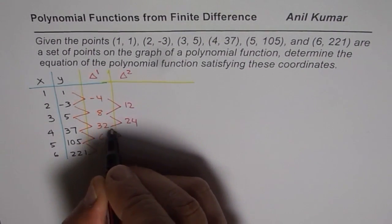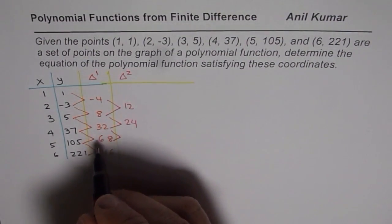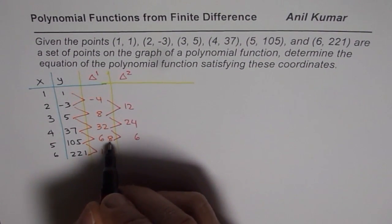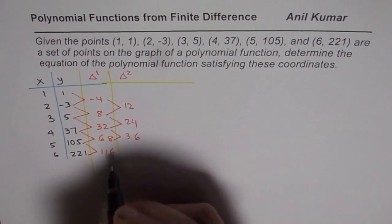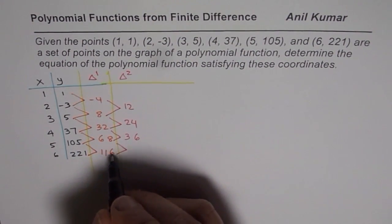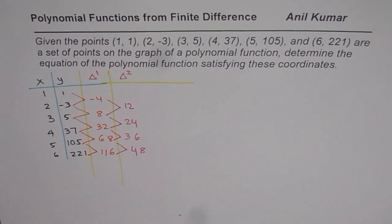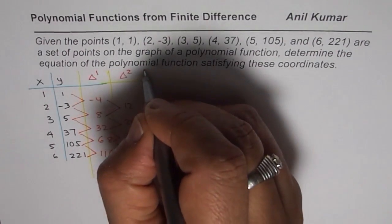68 minus 32 is 36, and then 116 minus 68 is 48. What we see is the second finite difference is also not constant, so we will move and find the third finite difference.